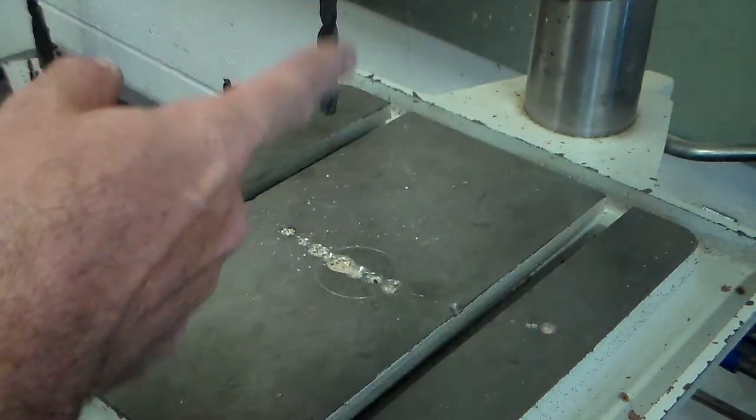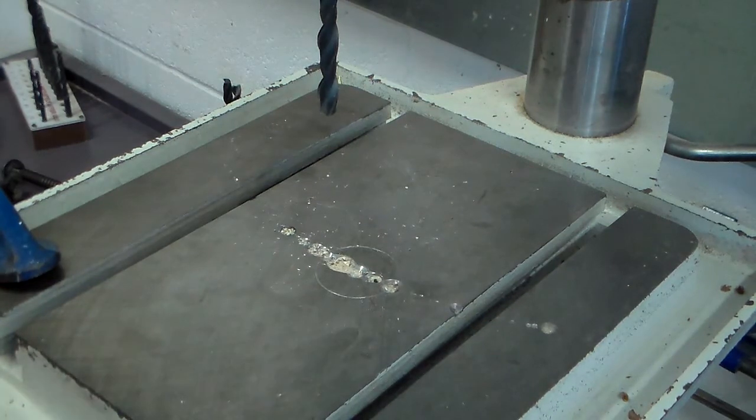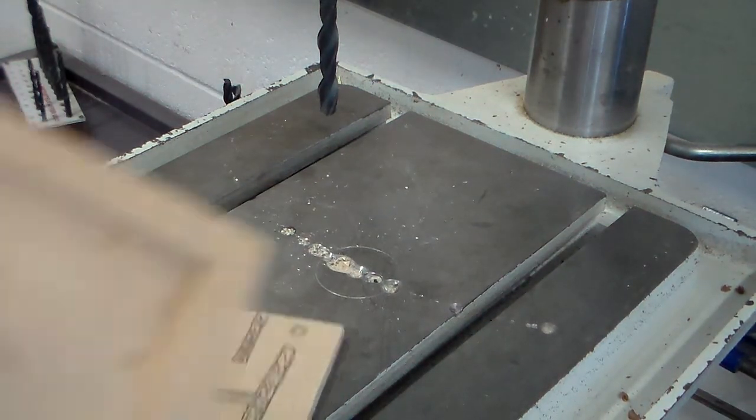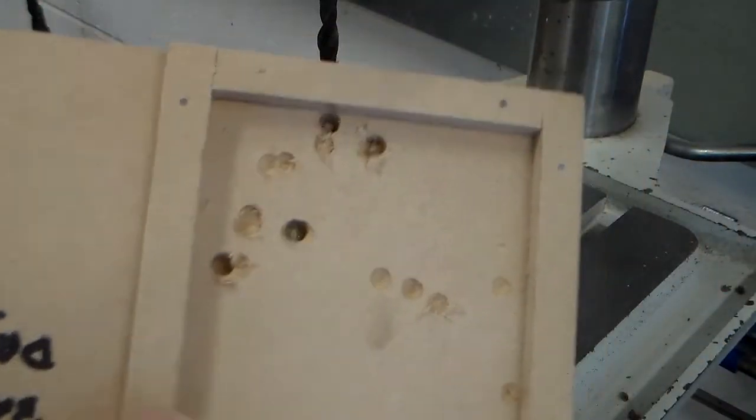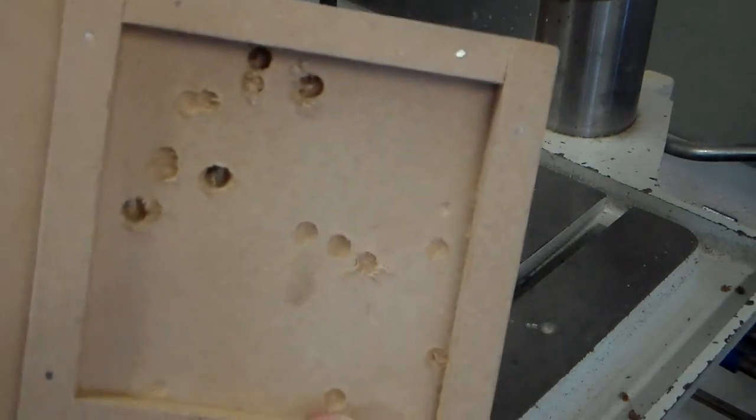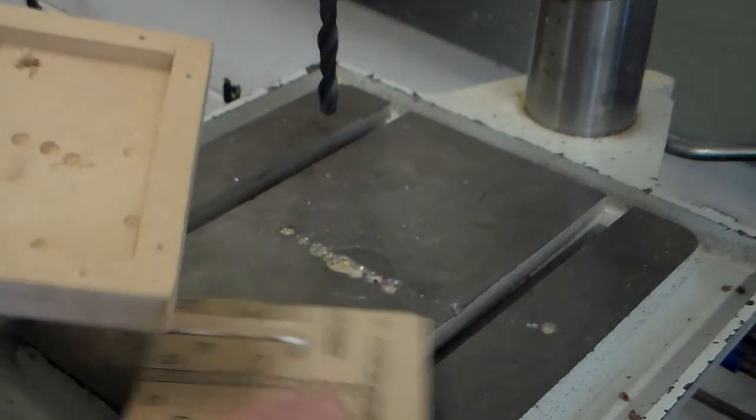Now to do this we're going to use the pillar drill here and we're also going to use a jig. A jig is something that helps us with a repetitive task. Now this jig is quite simple.